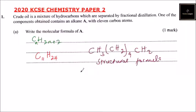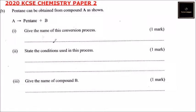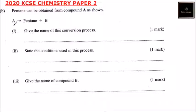Part B: we are told pentane can be obtained from compound A. So A undergoes a process to produce pentane plus compound B. Roman numeral 1: give the name of this conversion process. This process is known as cracking — compound A is cracked to produce pentane and another compound B.